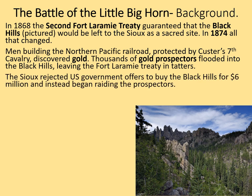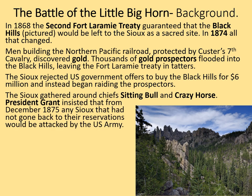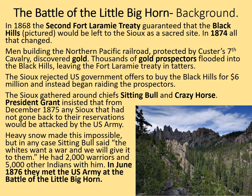The Sioux rejected US government offers to buy the Black Hills for $6 million and instead began raiding the prospectors. The Sioux gathered around the chiefs Sitting Bull and Crazy Horse, who had refused to sign the 1868 Treaty. President Grant insisted that from December 1875, any Sioux who had not returned to the reservations would be attacked by the US Army, presuming them to be hostile. Heavy snow made this impossible. But Sitting Bull declared that the whites want a war and we will give it to them. He had 2,000 warriors and 5,000 other Indians with him. In June 1876, they met the US Army at the Battle of Little Bighorn.